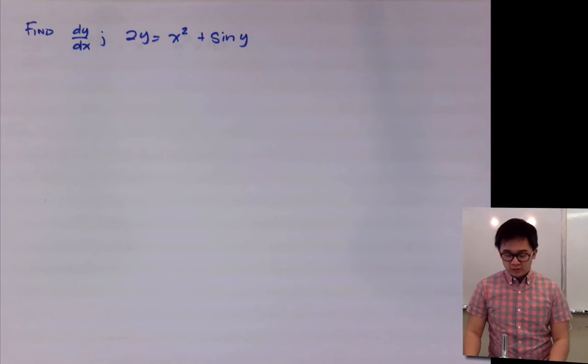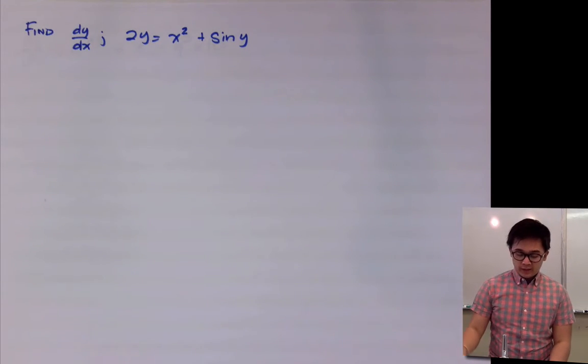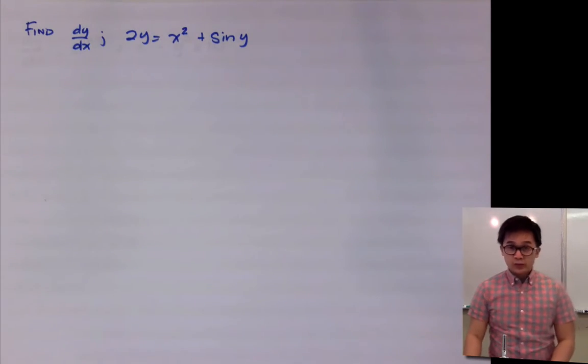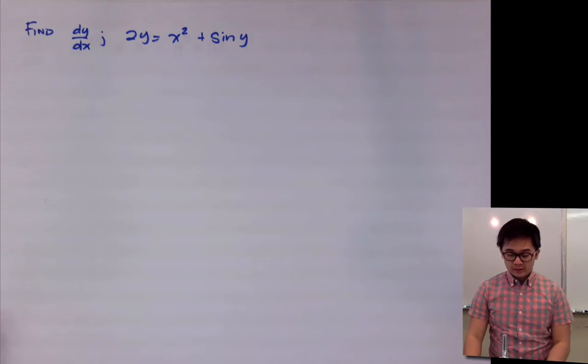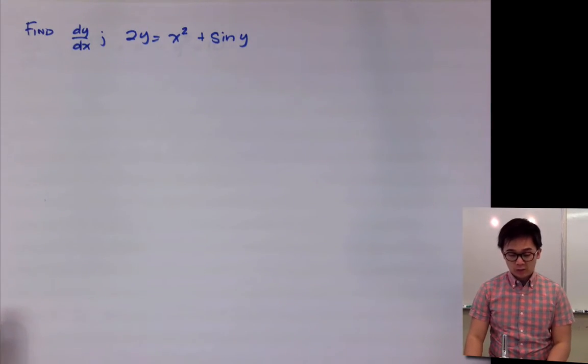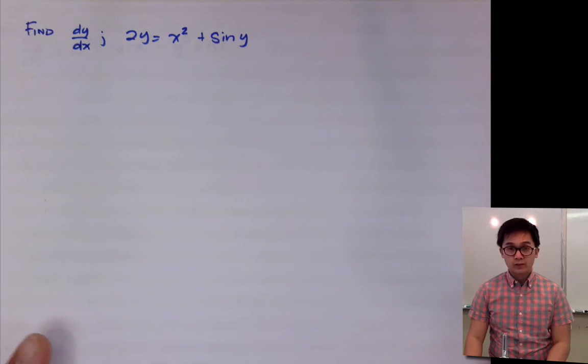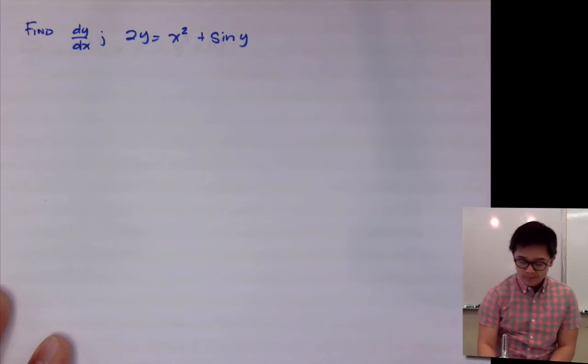Let's work on implicit differentiation. For our first function, let's differentiate 2y equals x squared plus sine y.